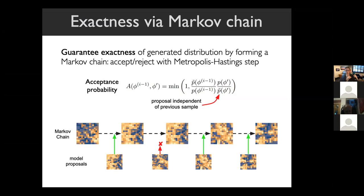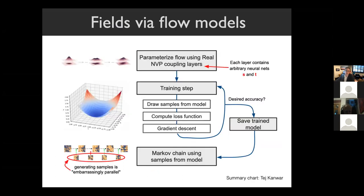The workflow: parameterize the flow as a change of variables from an easy-to-sample prior to the distribution of interest, using arbitrary neural networks whose parameters you optimize. Train by drawing samples from the model, computing the loss function, and doing gradient descent. After saving the trained model, sample in an embarrassingly parallel way by drawing independent samples from the model, then composing them into a Markov chain with an accept-reject step. In the limit of a large number of samples, exactness of the probability distribution is guaranteed just as in usual Hamiltonian Monte Carlo.